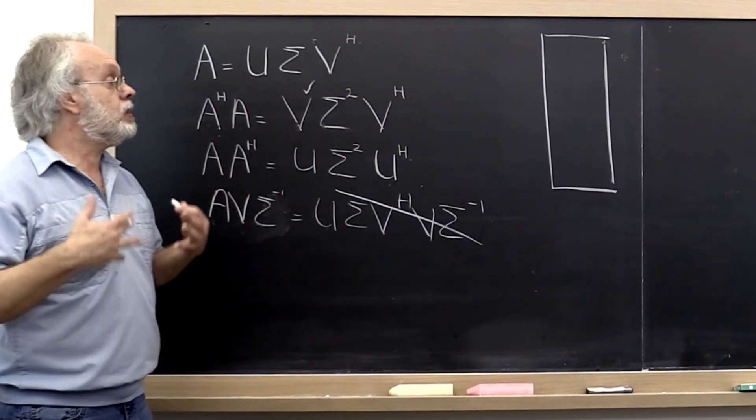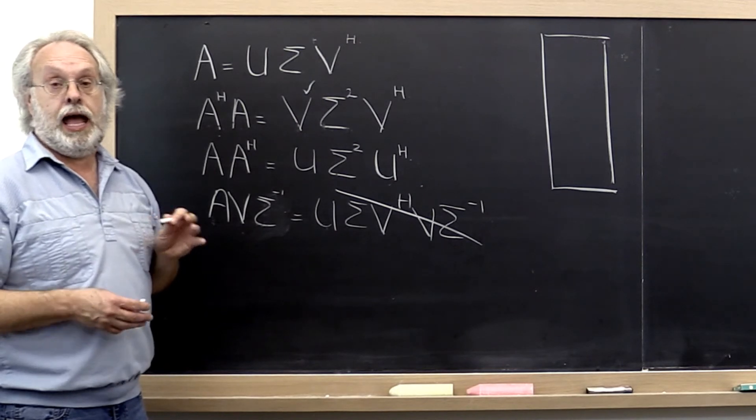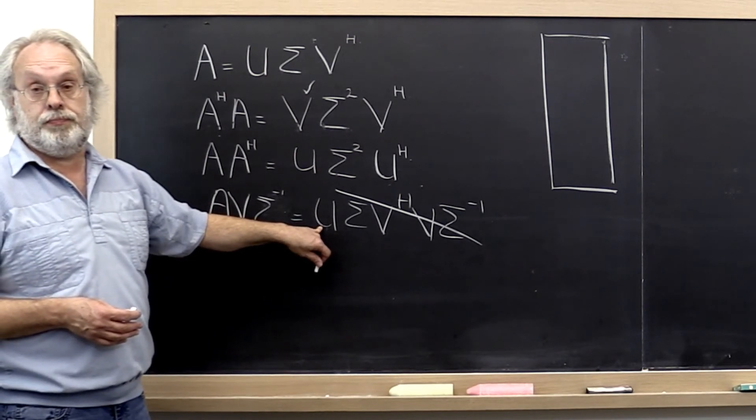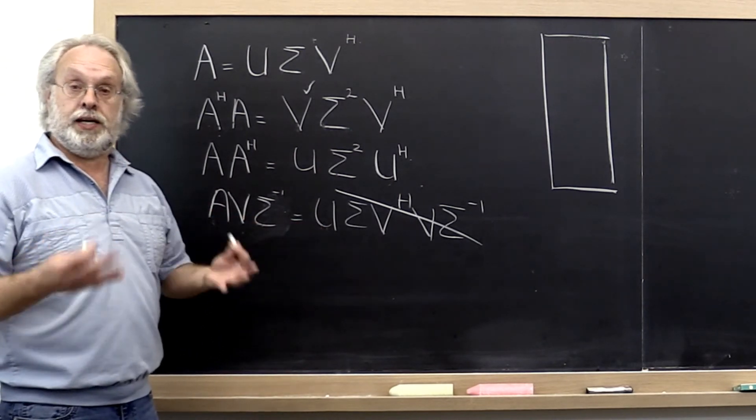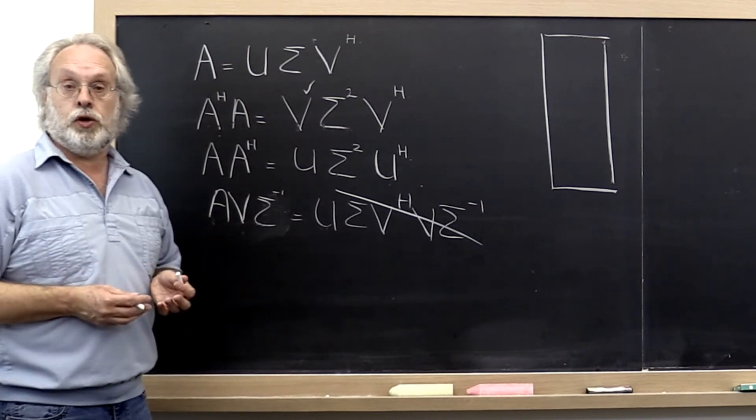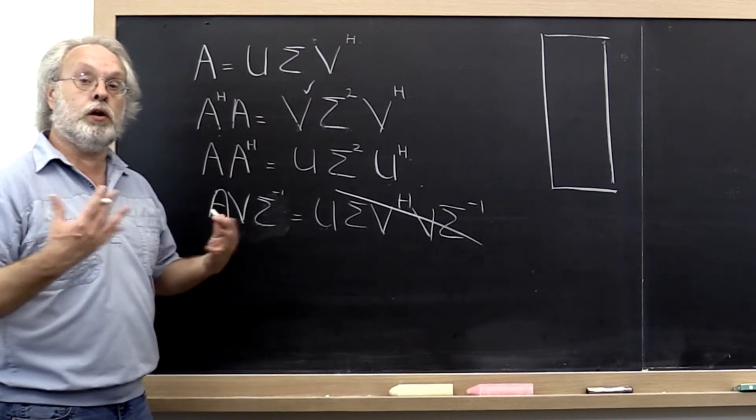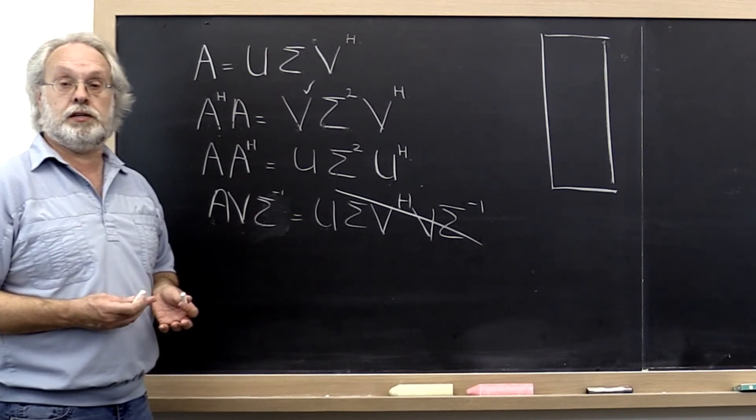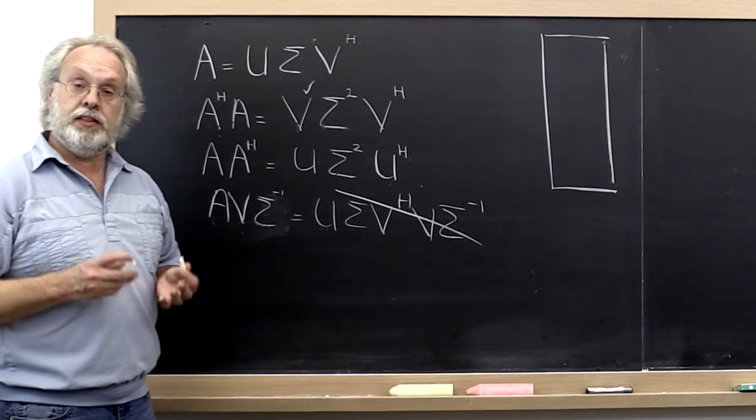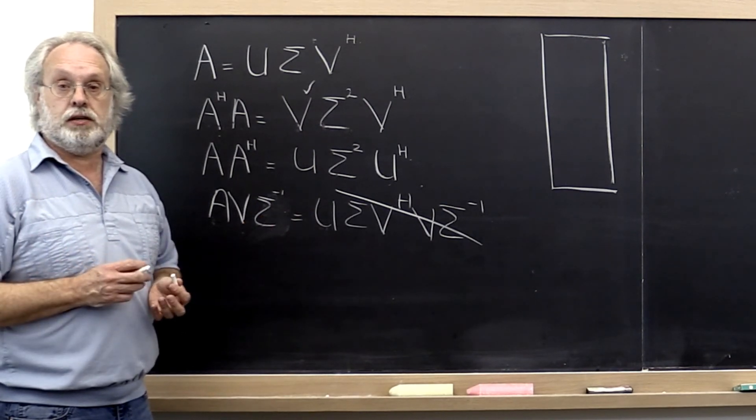It turns out that we can avoid computing A Hermitian A and we can actually more directly compute our matrix U. And the algorithm that we're going to create, building on what we learned in the last week when it came to computing the spectral decomposition, that algorithm is again only going to cast all of its computation in terms of similarity transformations, unitary similarity transformations. And therefore we are going to get an algorithm that has all of the nice properties that we want.